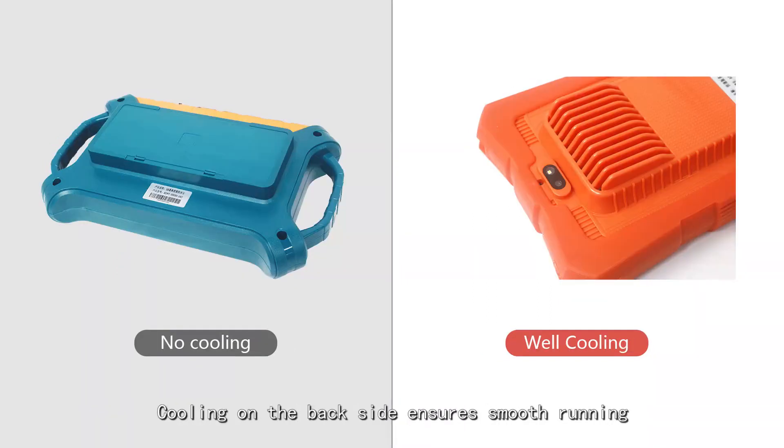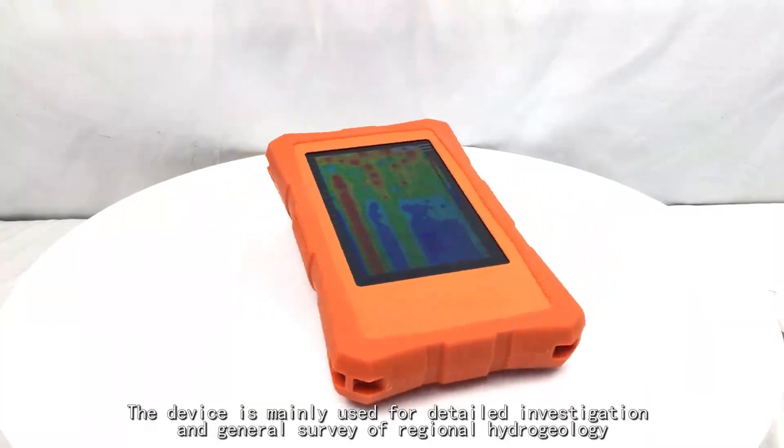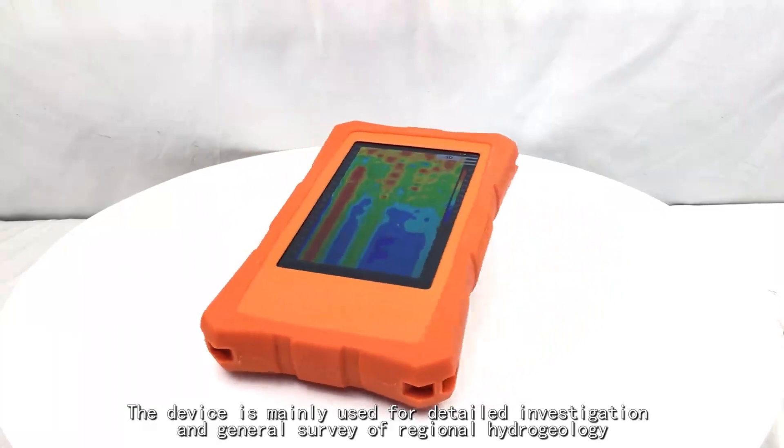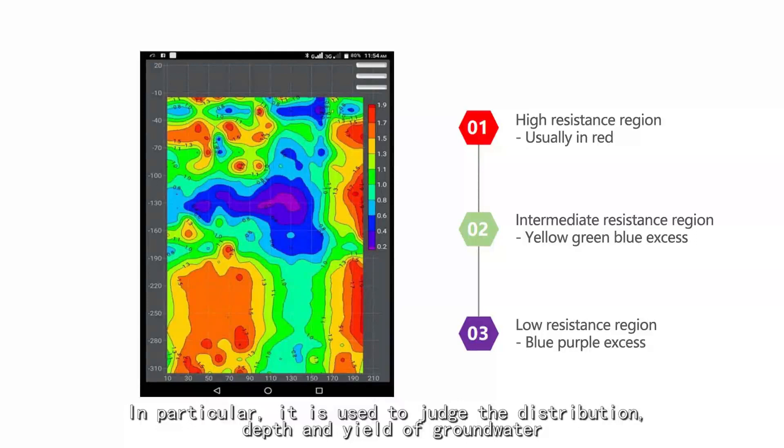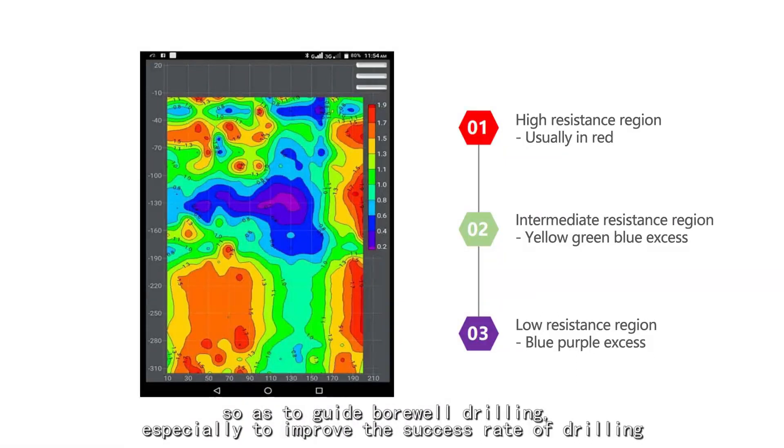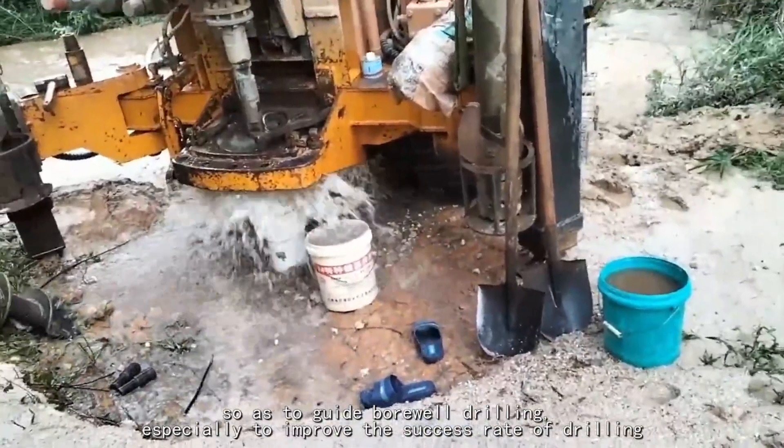The device is mainly used for detailed investigation and general survey of regional hydrogeology. In particular, it is used to judge the distribution, depth and yield of groundwater, so as to guide borehole drilling, especially to improve the success rate of drilling.